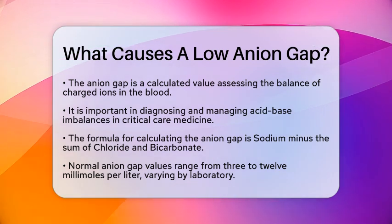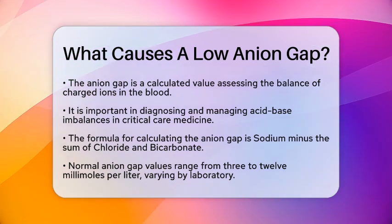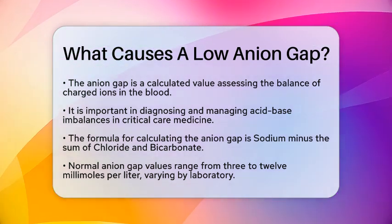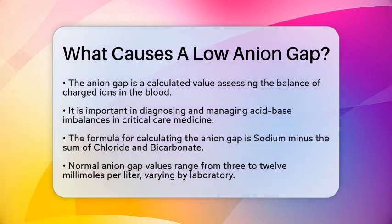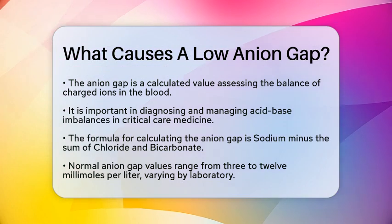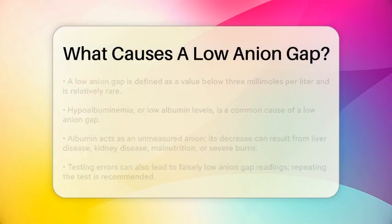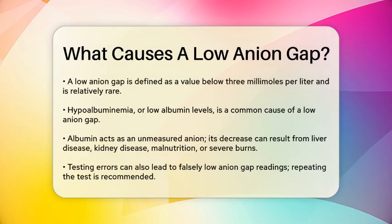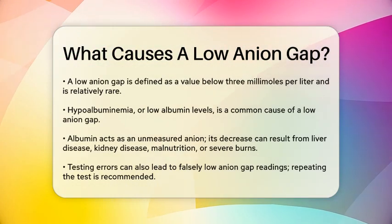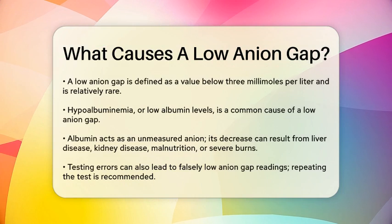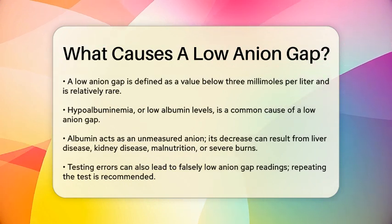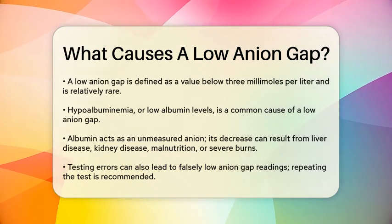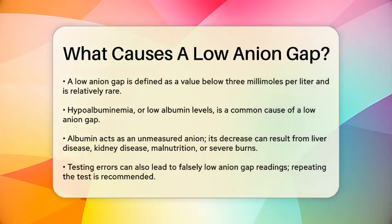Now let's get into what causes a low anion gap, which is generally defined as a value below 3 millimoles per liter. This condition is relatively rare and can arise from several factors.